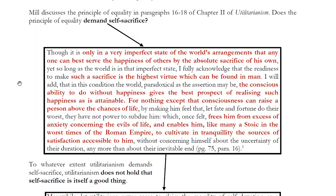He's saying the ability you have to put aside your own needs, your own desires, your own wants, and think about others — although in the moment it seems like you're sacrificing your happiness — actually gives you the opportunity to have a higher sort of happiness, which the person who's completely selfish will never fully be able to understand. He even compares the utilitarian doctrine to the doctrine of the Stoics: nothing except the consciousness of being able to do without happiness can raise a person above the chances of life. It can free him from excess of anxiety and enable him, like many a Stoic in the worst times of the Roman empire, to cultivate in tranquility the sources of satisfaction accessible to him.